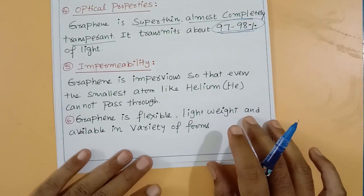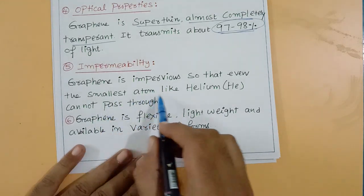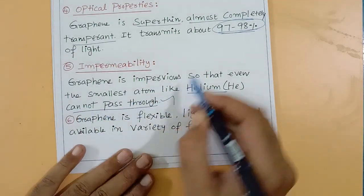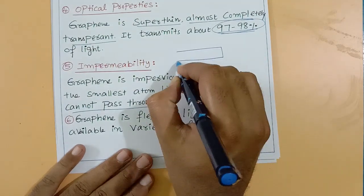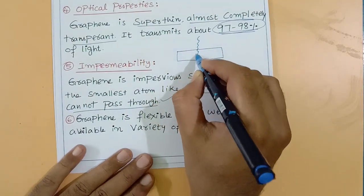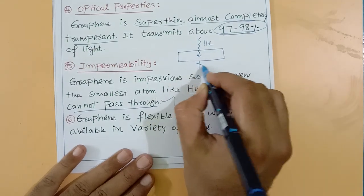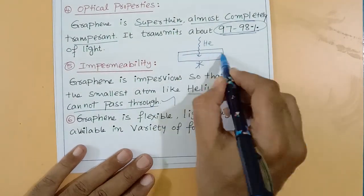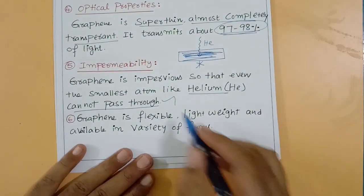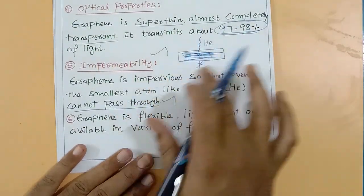Impermeability: graphene is impervious, so that even the smallest atom like helium cannot pass through it. If you pump helium at a graphene sheet, it cannot pass through. This property makes graphene very useful for water filtration applications.